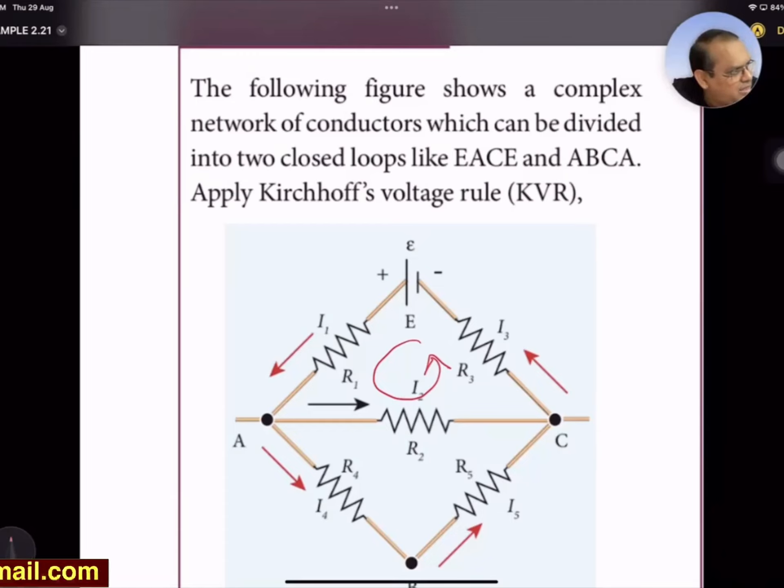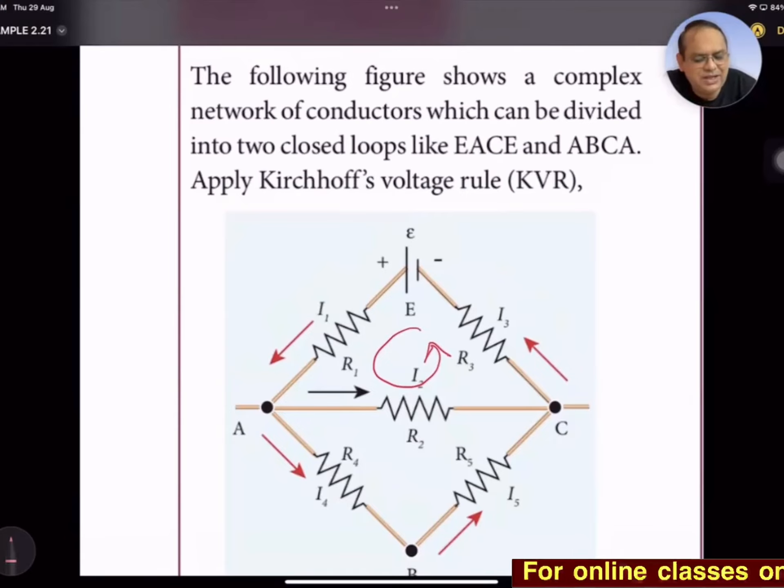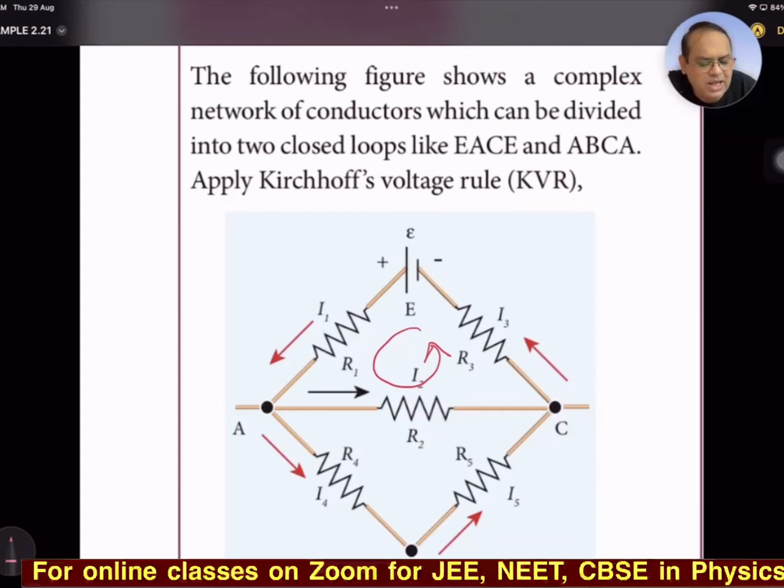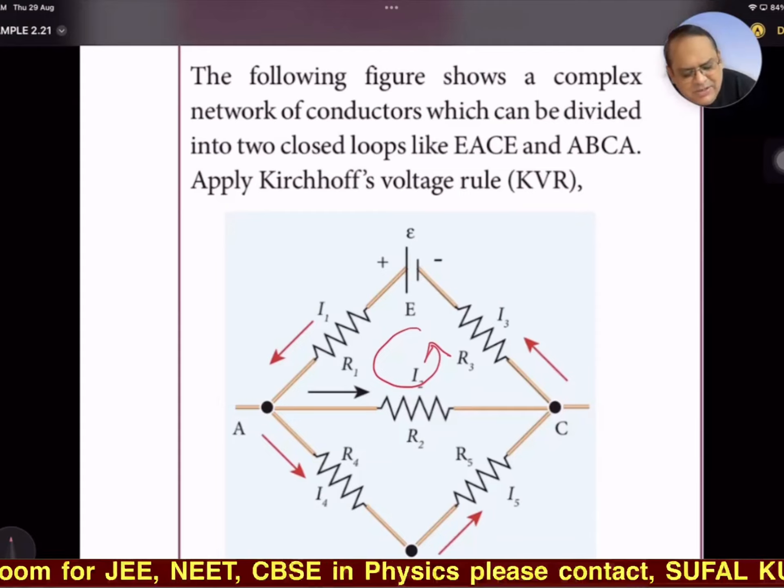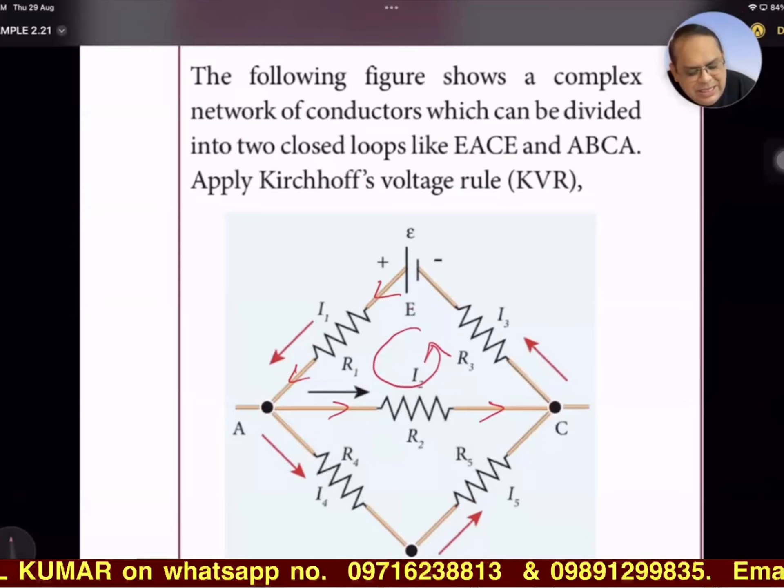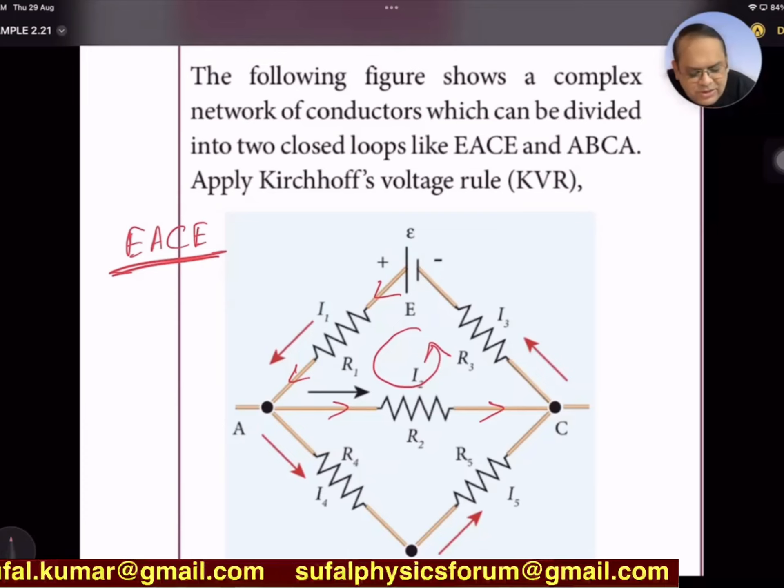The black arrow is suggesting that we have traversed the circuit along the direction of current. For loop EACE, if we write all potential drops—current is going this way and we are also traveling along the direction of current only, so positive I₁R₁.